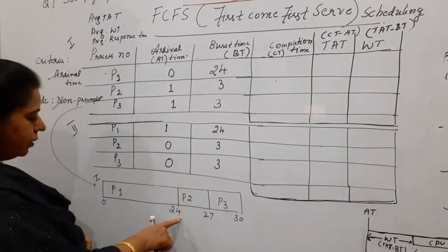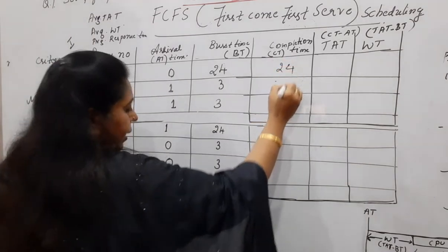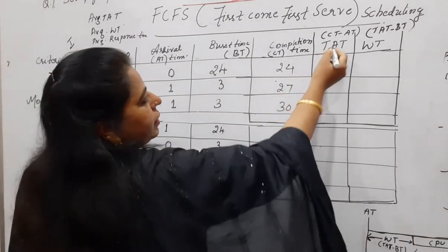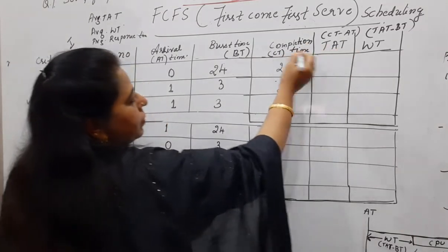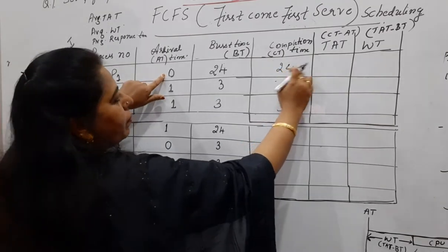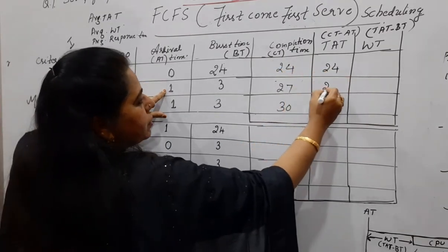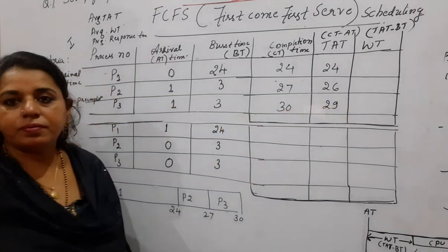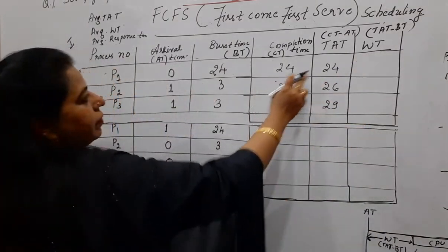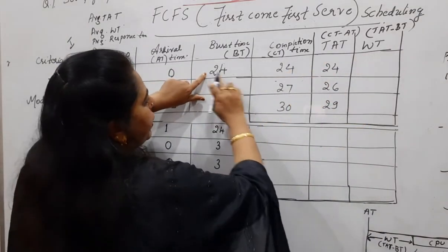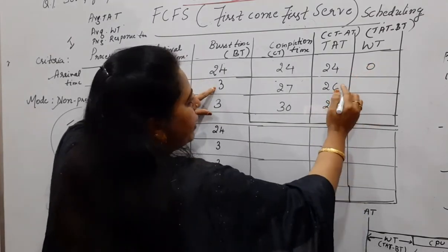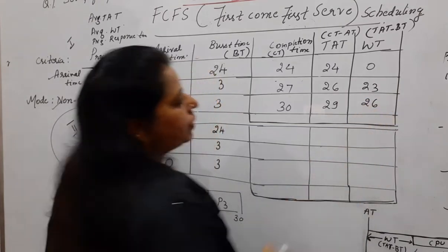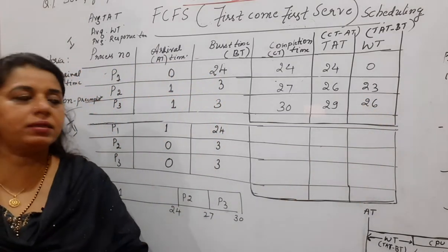Now quickly fill the values. P1 has completed at 24. P2 has completed at 27. P3 has completed at 30. Then you calculate the turnaround time. Turnaround time is completion time minus arrival time. 24 minus 0 is 24. 27 minus 1 is 26. 30 minus 1 is 29. Next, waiting time. Waiting time is turnaround time minus burst time. 24 minus 24 is 0. 26 minus 3 is 23. 29 minus 3 is 26.